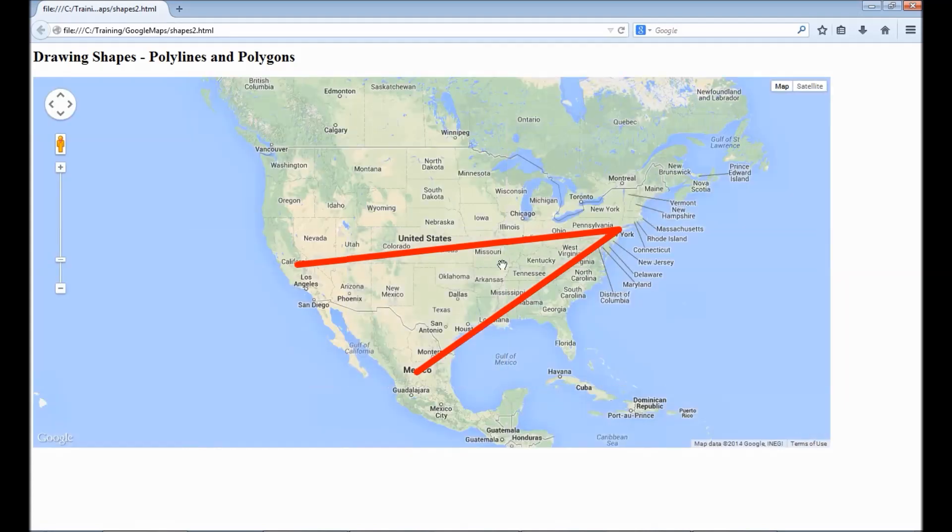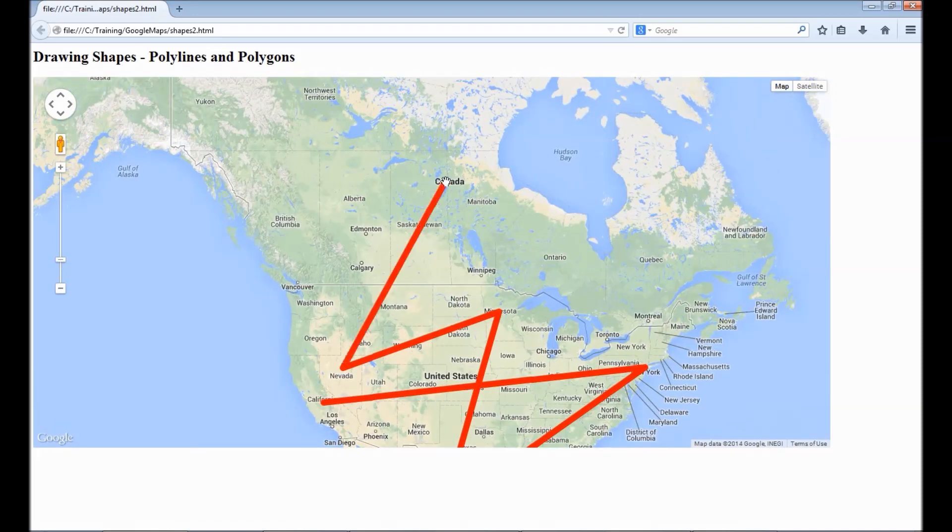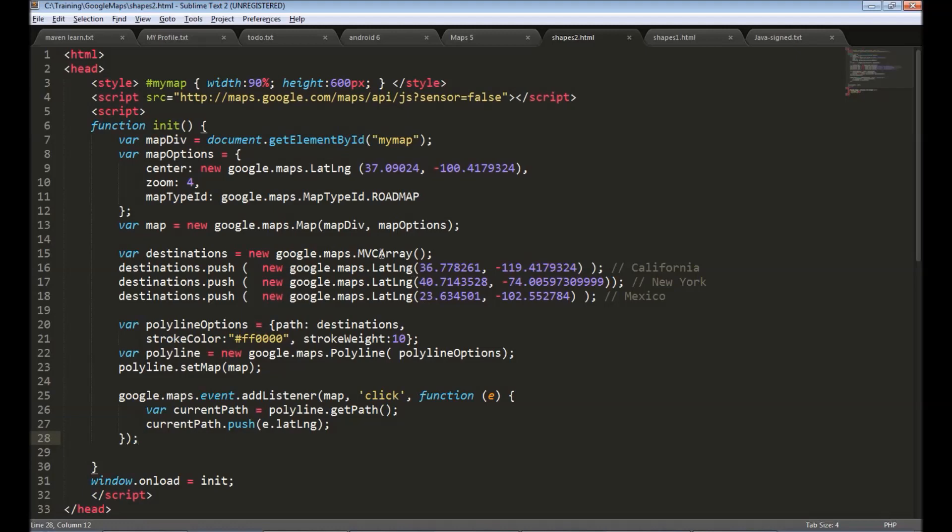Let's see how this works. So by default we have these three coordinates connected. Let's say I click on Minnesota. So you see the line is drawn from the last point to Minnesota. Let's say I click on somewhere in Nevada. So it keeps updating the array wherever whenever user clicks on something on the map. So that's the main advantage of using MVC array.